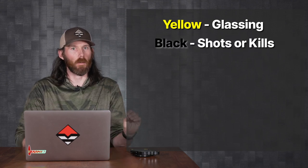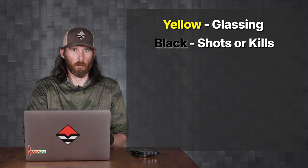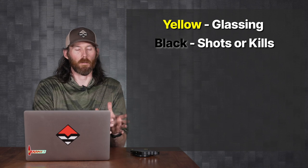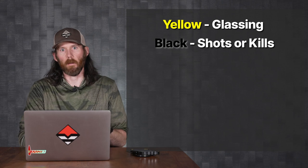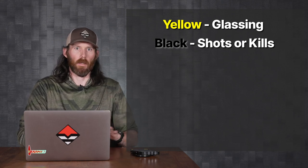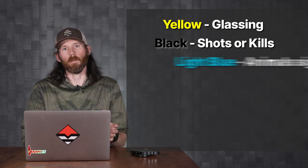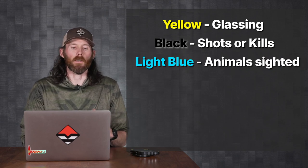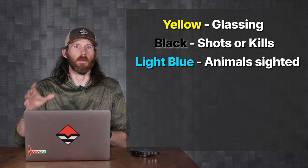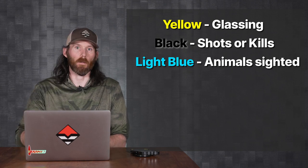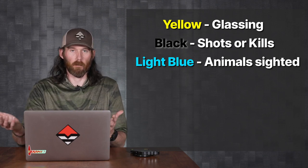Black is for all my shot locations — where I took a shot at an animal. I like to mark those for future reference so I know, when researching for another hunt, where those took place. Every single kill location — whether it's mule deer, black bear, or elk — those are going to be black too, and I'll change the waypoint style to match the species. Light blue on my maps is always animals sighted. If I'm glassing across a canyon and I see a mule deer in a certain location, light blue means animals located, wherever I see animals.